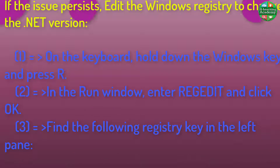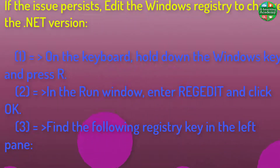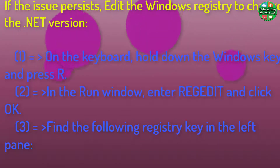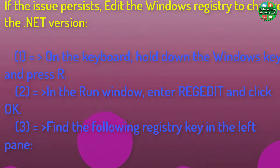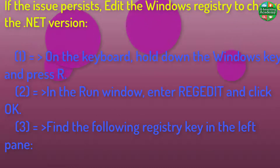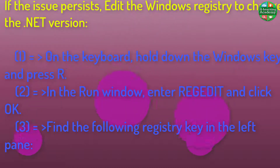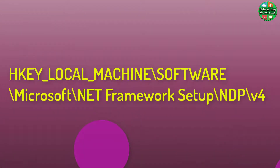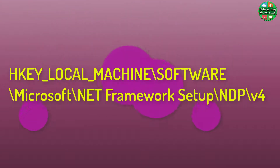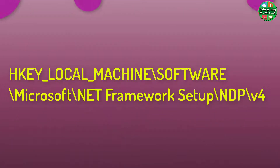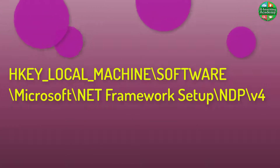Step 1: On the keyboard, hold down the Windows key and press R. Step 2: In the Run window, enter regedit and click OK. Step 3: Find the following registry key in the left pane: HKEY_LOCAL_MACHINE\SOFTWARE\Microsoft\NET Framework Setup\NDP\v4.